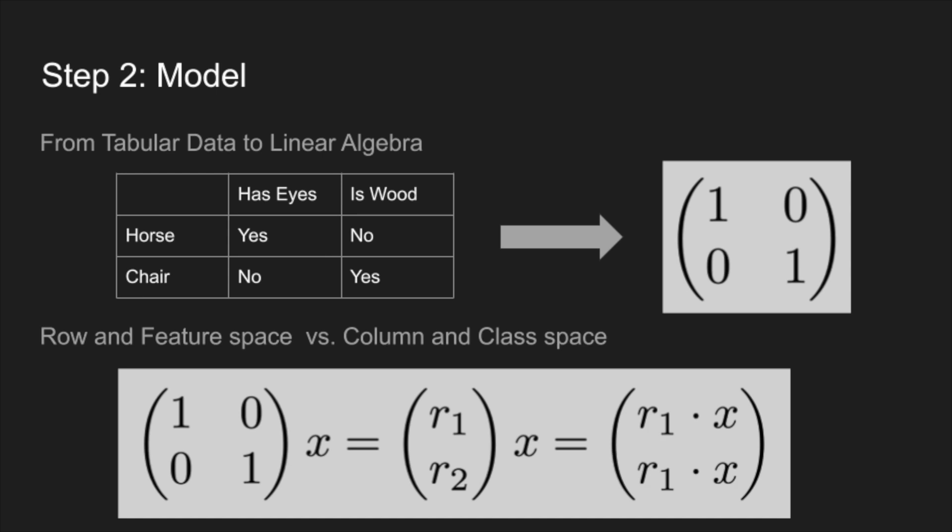We take that vector and multiply it by the matrix. When you multiply a vector by a matrix, you can look at the row vectors and take the dot product with each of them. Taking dot products between two vectors is like measuring the similarity between those things. Our first row is a horse, our second is a chair. We get a column vector — the first number tells us how similar the input is to a horse, and the second tells us how similar it is to a chair.